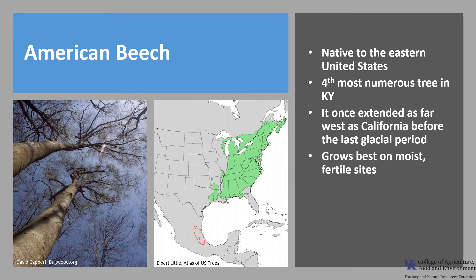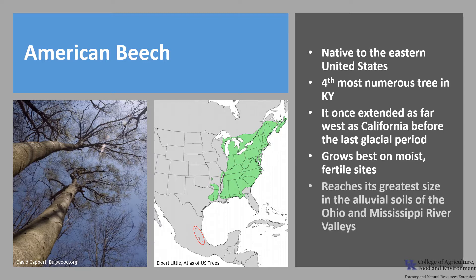American beech is found on a wide variety of soils, but generally grows best in moist, fertile sites. It reaches its greatest size in the alluvial soils of the Ohio and Mississippi River Valleys.